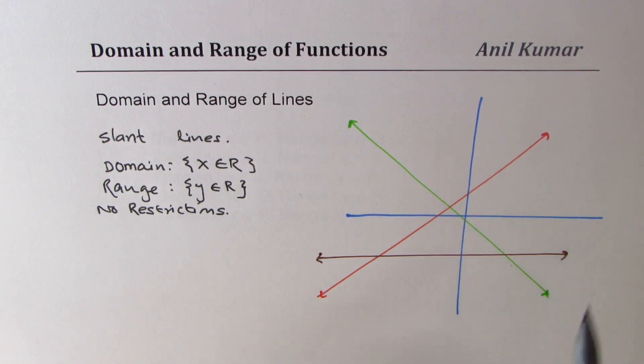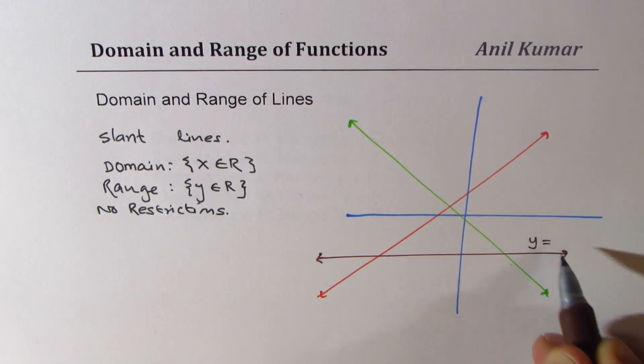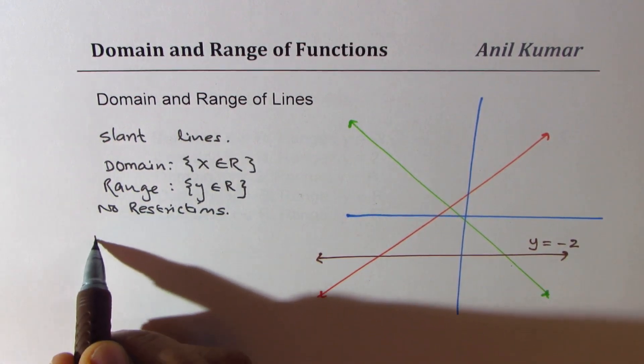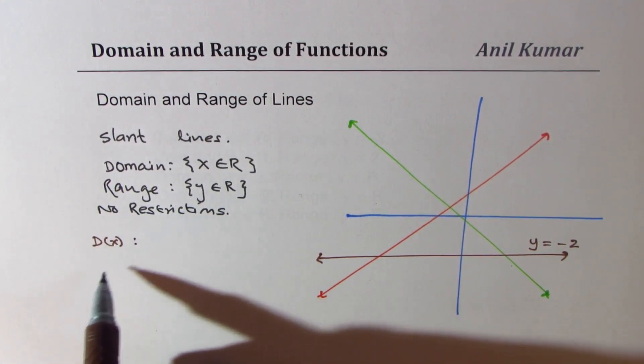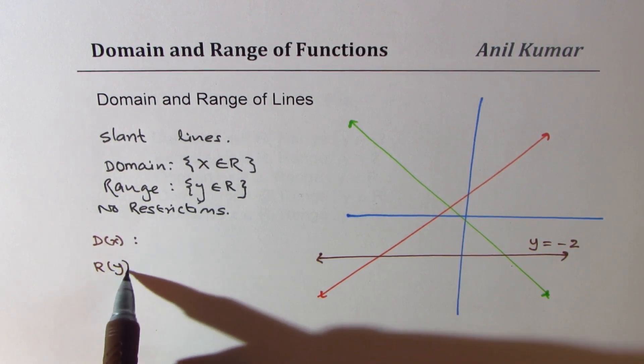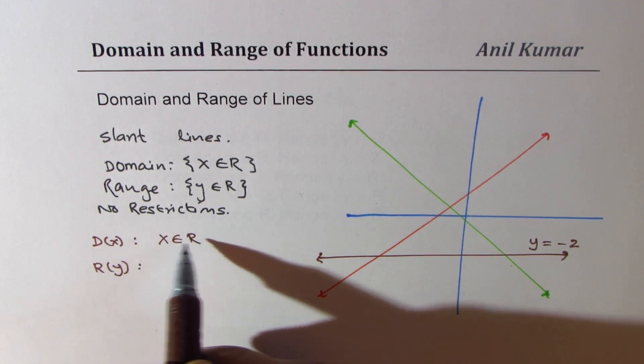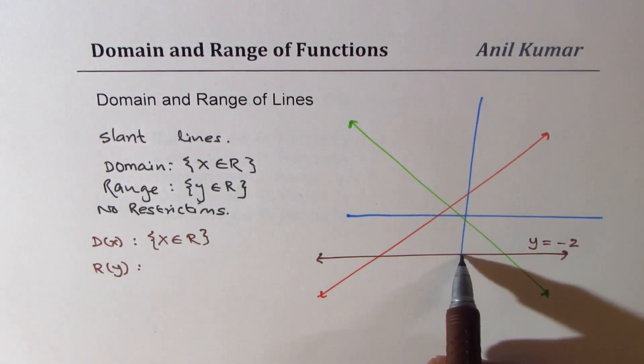Now let's say the equation of this line is Y equals minus 2. Now for this line, what is the domain and what is range? Well, clearly domain is that X belongs to real numbers, but the range is restricted.